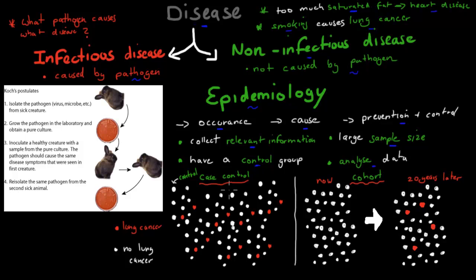Two examples of epidemiological studies are case controls and cohort studies. In a case control, we have, say, 500 people and collect information from all of them. Once we've collected that information — for example, who has lung cancer and who doesn't — we label them. Then we analyze the data to find out what the people with lung cancer have in common. Maybe many of them were smokers, whereas those without lung cancer were not. So we're comparing people who are affected to people who are not affected — those unaffected are the control group.